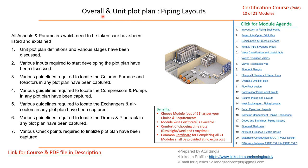Plot plan — overall and unit — are basic documents a piping layout engineer must understand. We'll look into various plot plan definitions and the stages a plot plan goes through during the project life cycle, along with all inputs required for its development. Guidelines for locating columns, furnaces, reactors, compressors, pumps, exchangers, air coolers, drums, and pipe racks will all be covered.